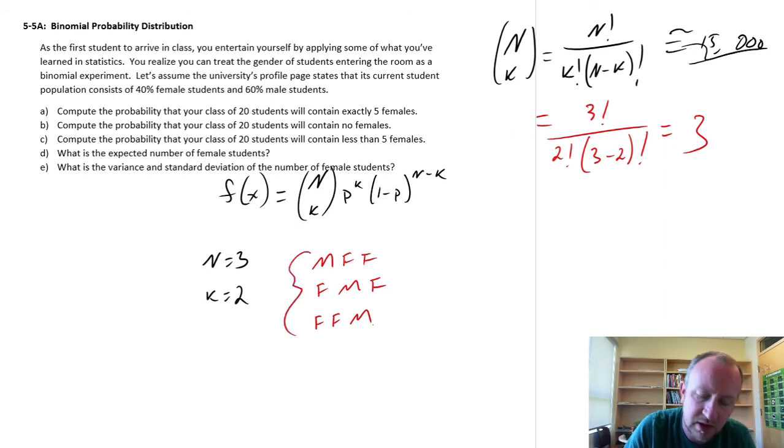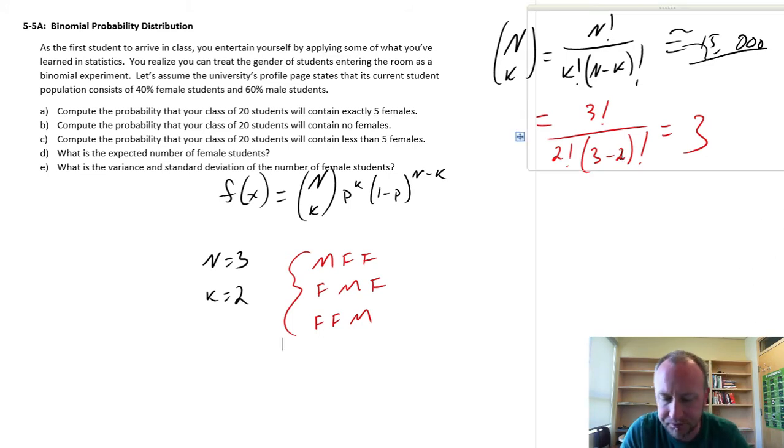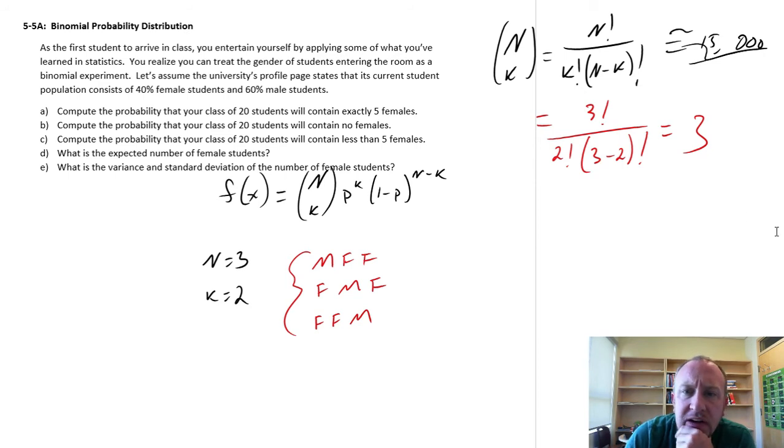So this is what we've identified here. We have these three different possible combinations of students entering the room sorted by gender. So now we have three possible experimental outcomes.